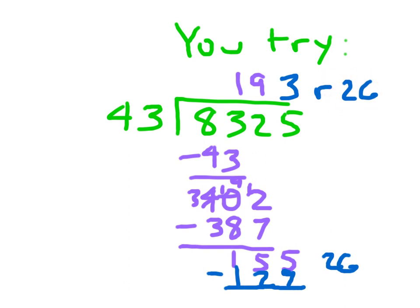8,325 divided by 43 is 193 remainder 26. Sure, my remainder looks big, but it's still smaller than my divisor. If I expressed it as a fraction and mixed number, I'd have 193 and 26 43rds. That's it.